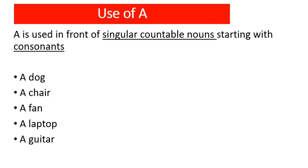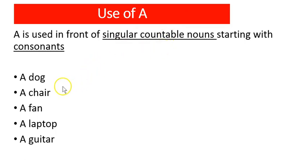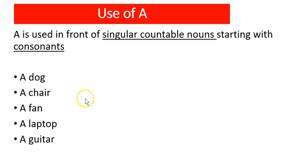So when do you use 'a'? A is used in front of singular countable nouns starting with consonants. Vowels are a, e, i, o and u, and consonants are the remaining 21 letters in the English language. For example: a dog, a chair, a fan, a laptop, a guitar. These words start with d, c, f, l and g — all consonants. Also remember, a and an always mean one, so if a noun becomes plural, you will not use the article.